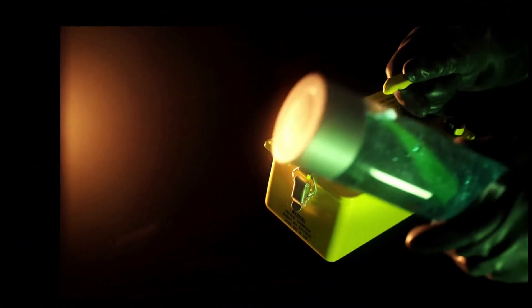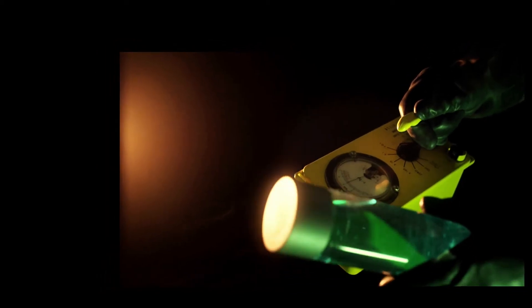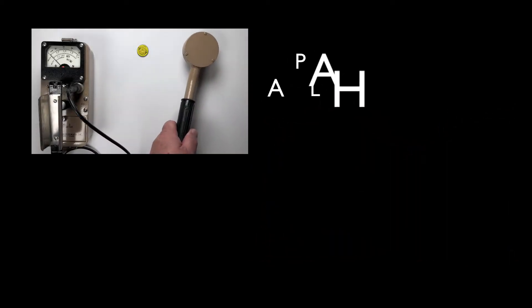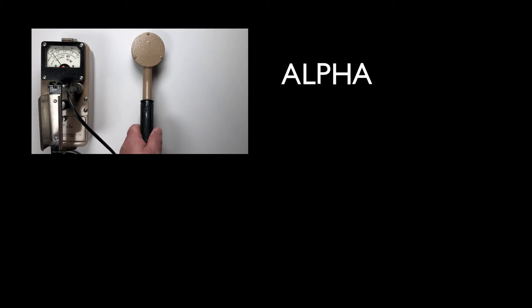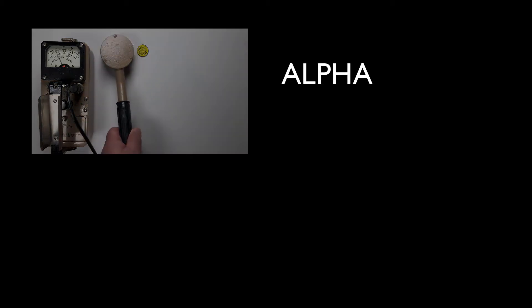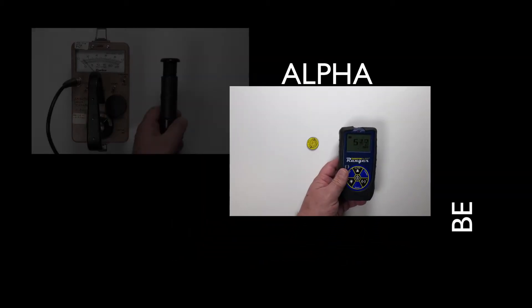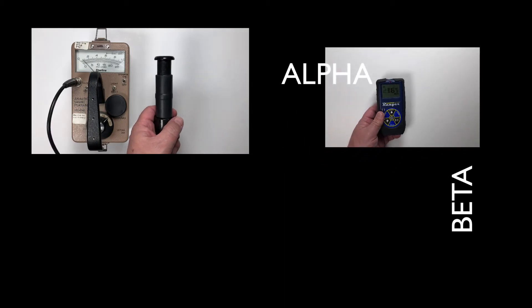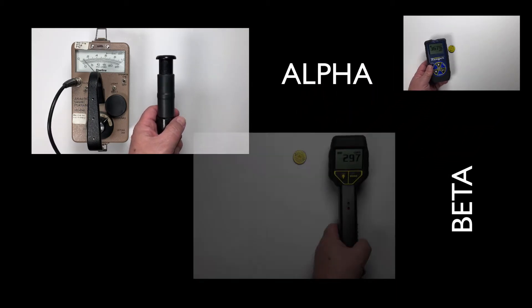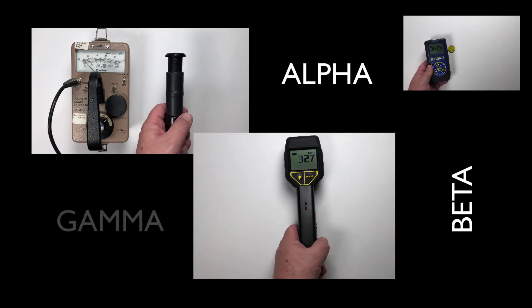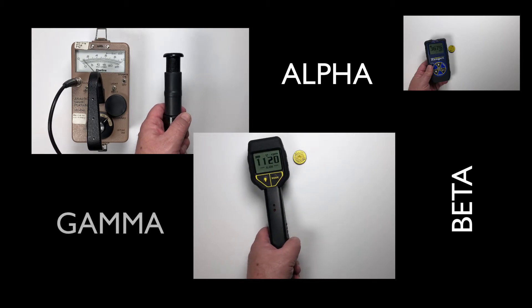Geiger counters have not only been around for a very long time, but they continue to be one of the most utilized radiation detection systems around the world, even today. Their ability to detect alpha, beta, gamma, and x-ray radiation make them very versatile for measuring radioactive contamination and exposure rates. Geiger counters' ability to simply and reliably measure radiation makes them an excellent tool for protecting ourselves from radiation, but that's not what their original purpose was.